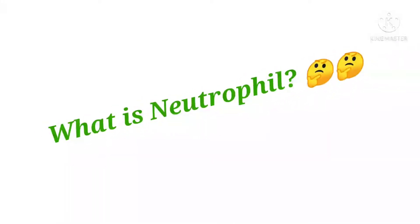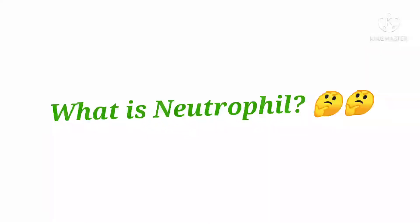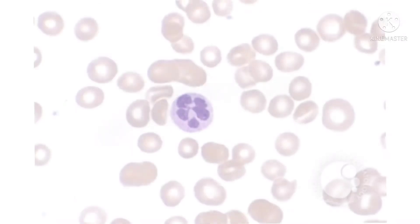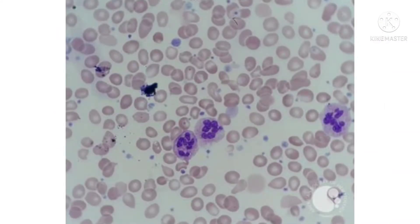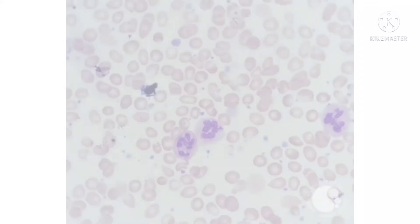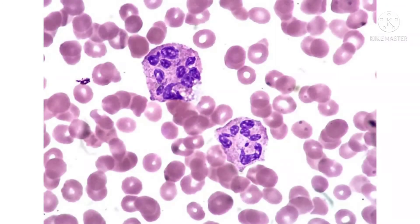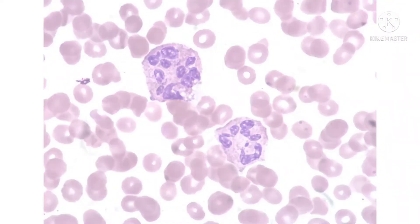First we have to know what is a neutrophil and how it looks. Neutrophils are a type of white blood cell. In fact, most of the white blood cells that lead the immune system's response are neutrophils. There are four other types of white blood cells. Neutrophils are the most plentiful type, making up 55 to 70 percent of your white blood cells, which are also called leukocytes and are a key part of your immune system.